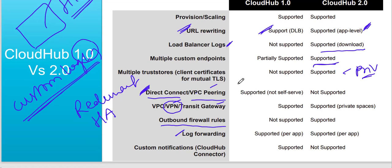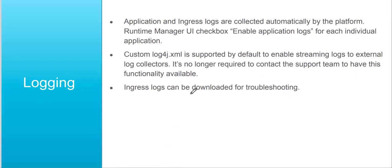With custom Log4j in CloudHub 2.0, you can add appenders for Splunk or ELK, and your logs will be forwarded directly to those systems. Custom notifications, which were supported in CloudHub 1.0 via CloudHub connectors, are not supported in CloudHub 2.0. The goal is to make everything self-service so we don't need any help from the MuleSoft support team.